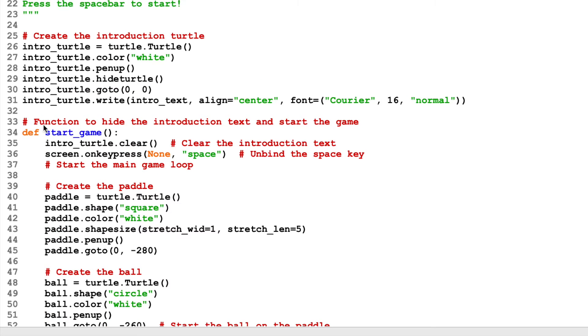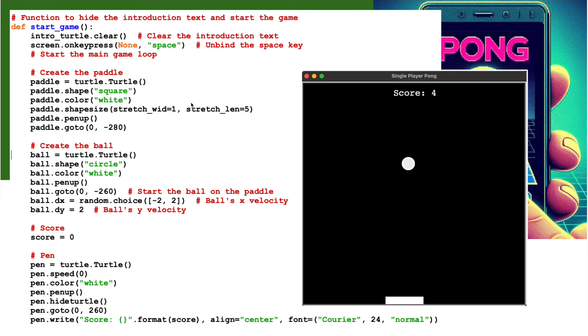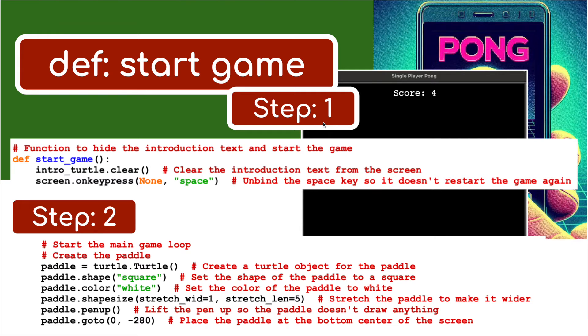We can then move on and start working on how the game actually will begin. How the game is played - by creating a paddle, creating a ball. For this next bit I'm going to define the start of the game. I'm going to create a paddle, create a score and create a pen to write the word score onto the screen. So let's do step one - we're going to define start_game.